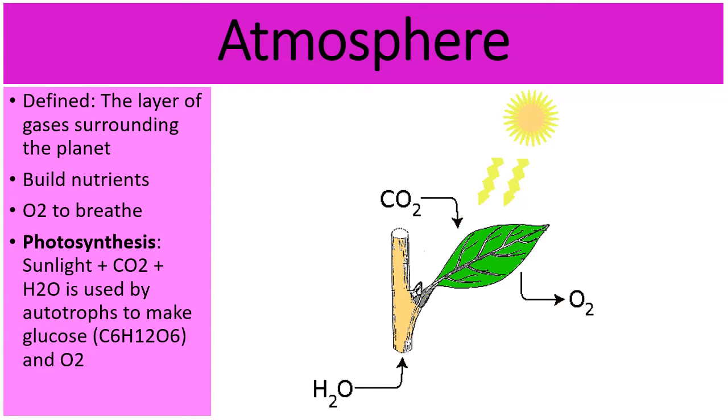So if we summarize photosynthesis really quick, there's really three main ingredients of photosynthesis. Sunlight, carbon dioxide from the sky, and water.